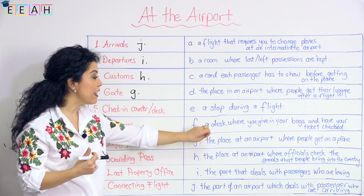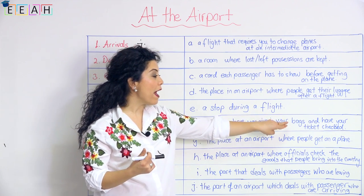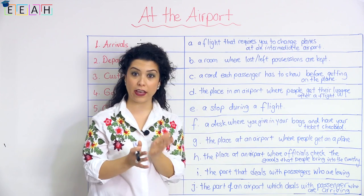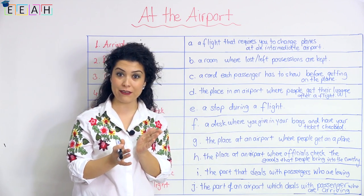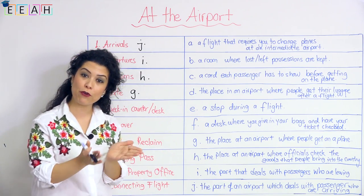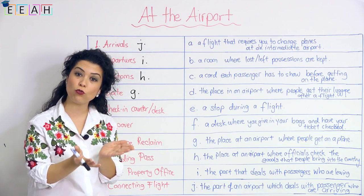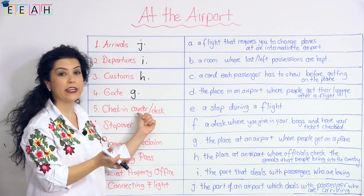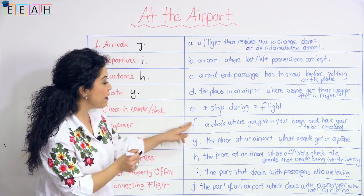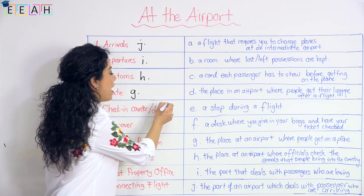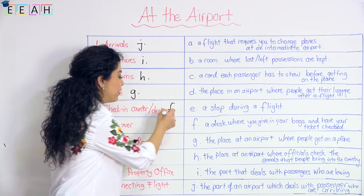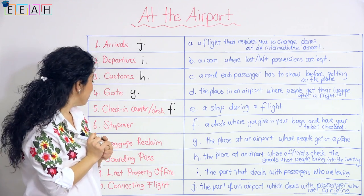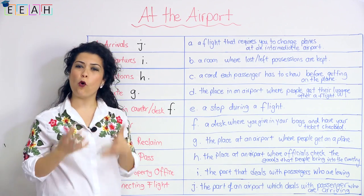Next we have 'check-in counter' or 'check-in desk.' This is a desk where you give in your bags and have your ticket checked. You have a person, an official, to help you at the check-in counter or desk. This matches with F.